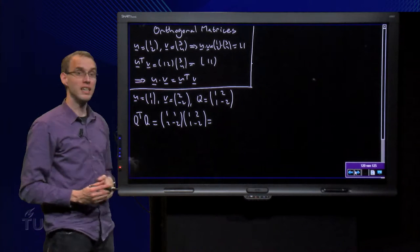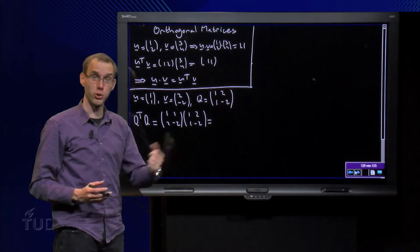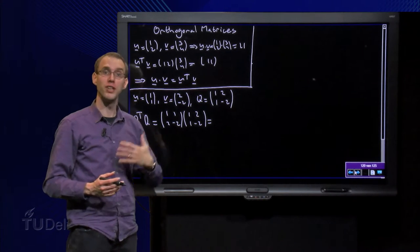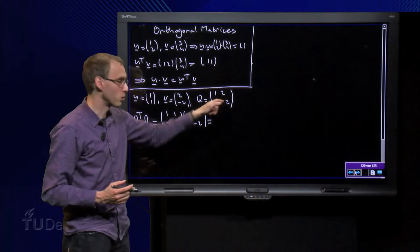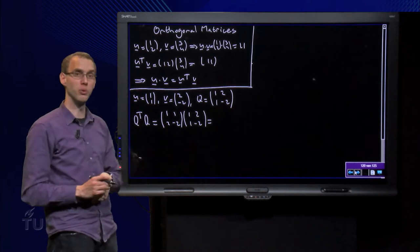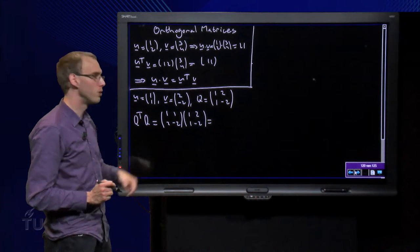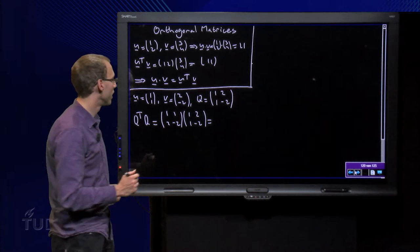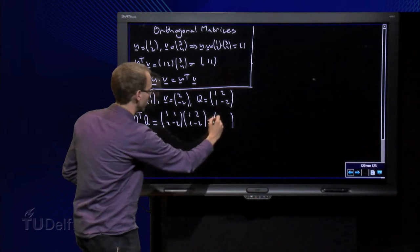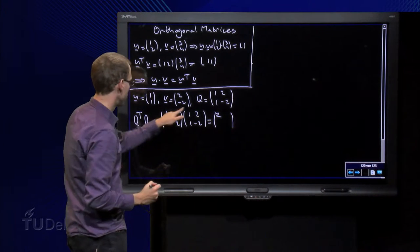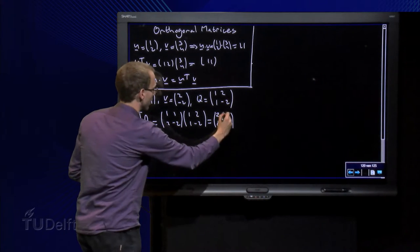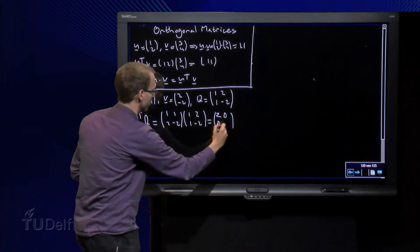Suppose I have u and v, as you see those two are orthogonal to each other, the inner product equals zero, and say I form the matrix Q, which consists of the two orthogonal vectors u and v. So what happens now if I compute Q transpose times Q? We put Q transpose there, Q over here, and we find a 2 by 2 matrix: 1 plus 1 equals 2, 2 minus 2 equals 0, 2 minus 2 equals 0, and 4 plus 4 equals 8.